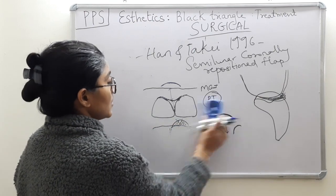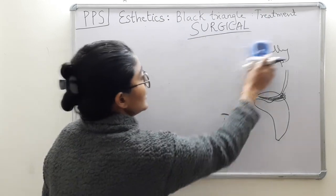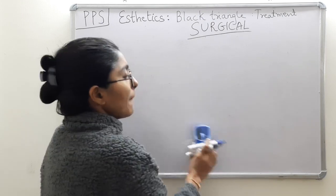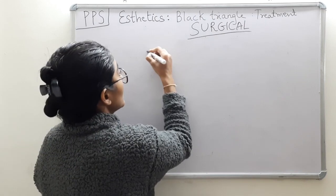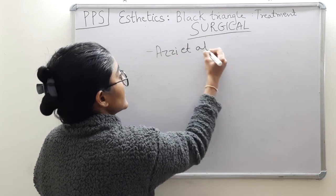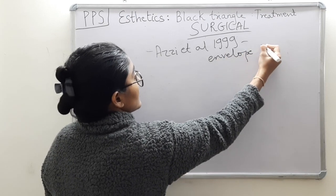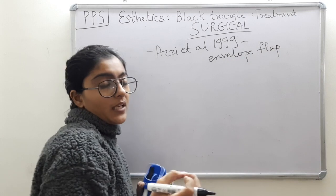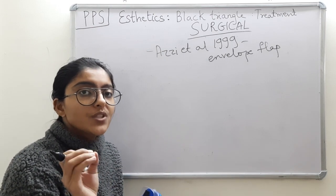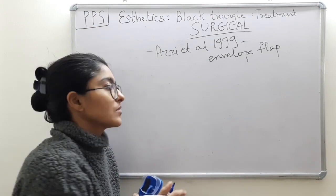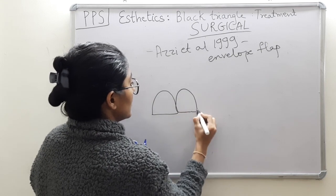With this we will discuss the third and final technique: Azzi et al. 1999. He proposed multiple techniques but the common principle of all is the envelope flap technique. What Azzi et al. 1999 proposed was an envelope type technique. This technique resembles the envelope flap technique of root coverage — a flap preparation which does not involve any vertical incisions. Let us first understand it on the facial aspect.